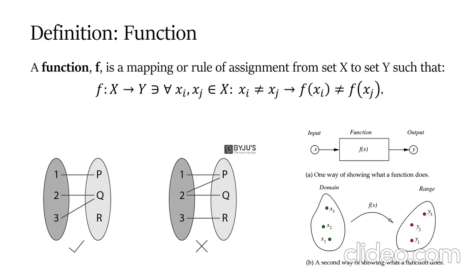To the bottom left we see an example of a function. It is clear that each distinct input maps to a distinct output. Towards the center we see the number two mapped to both P and Q. Because of this, this is not a function.